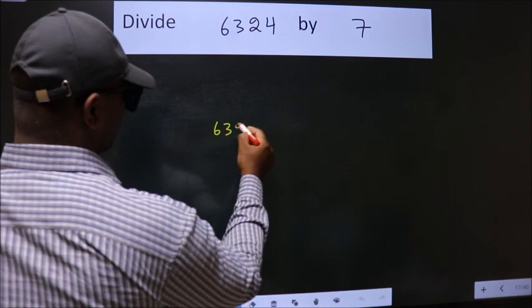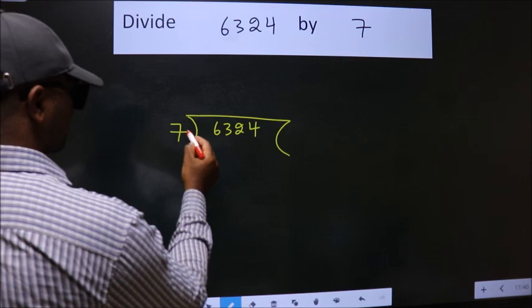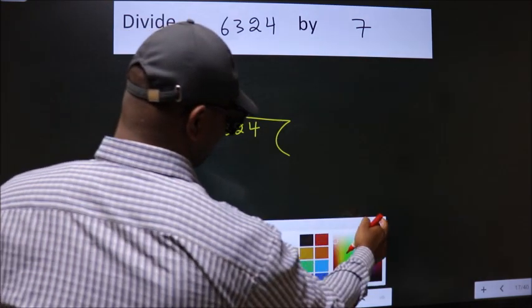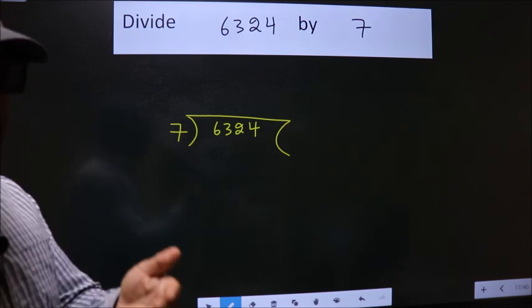6,324 here. 7 here. This is your step 1. Next.